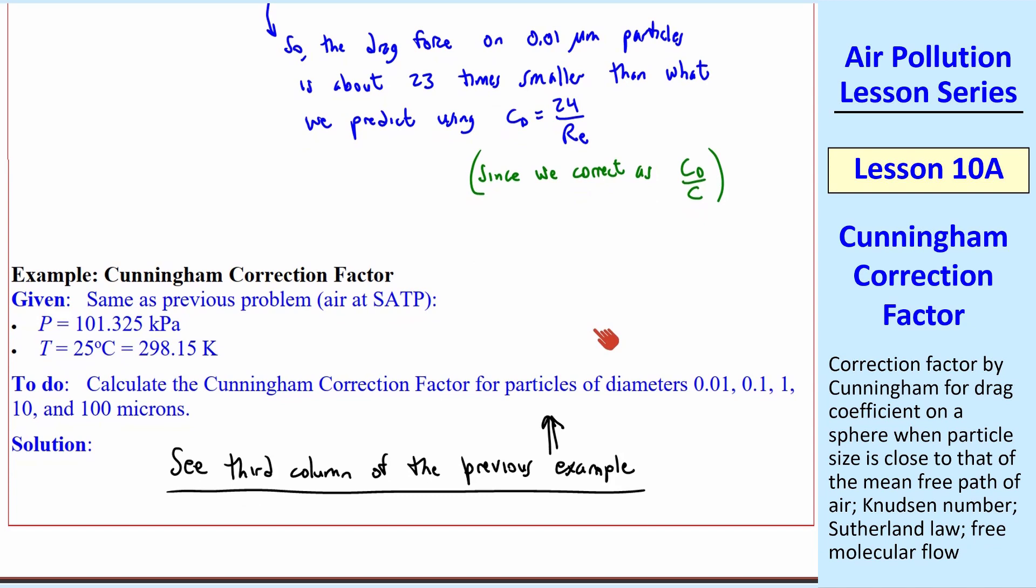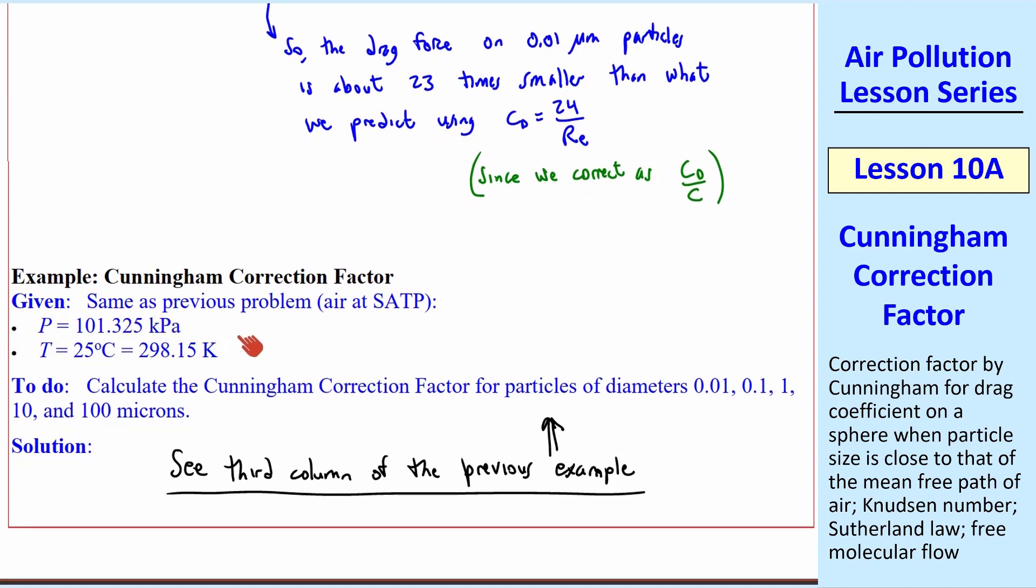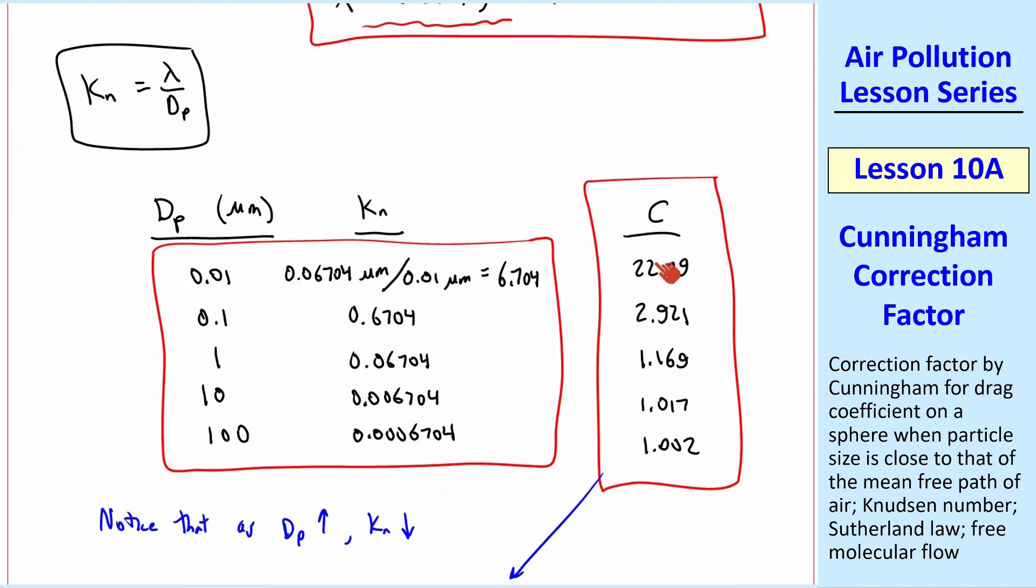Let's do another example problem. It's the same as the previous problem, air at SATP. Here we want to calculate Cunningham Correction Factor for these same five particles. I added a third column to the previous example results, and I'll show that here. Here's a column of Cunningham Correction Factor as a function of dp, where we calculate C based on the Knudsen number.